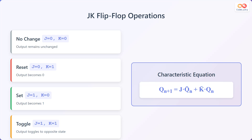Lastly, when J equals 1 and K equals 1, the toggle mode is activated, causing the output to toggle to the opposite state with each clock pulse. The characteristic equation for the JK flip-flop is given by Q at N+1 equals J times Q' at N plus K' times Q at N.